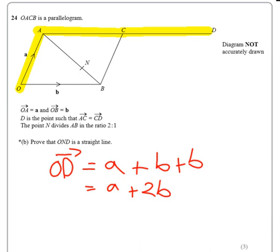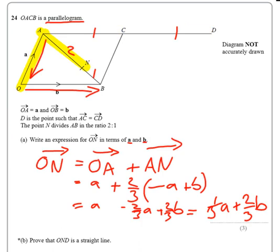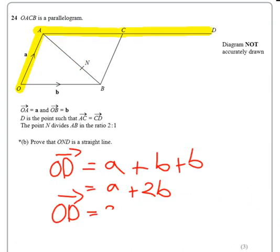So the statement that we need to write down to show that it is a straight line is that O to D is a multiple of O to N. And as you can clearly see, if O to N is one-third of a plus two-thirds of b, well then O to D is just three times by O to N.